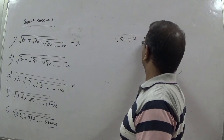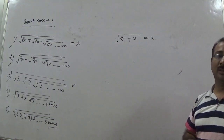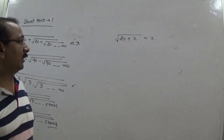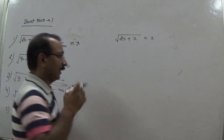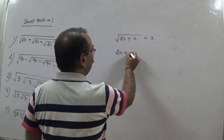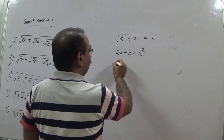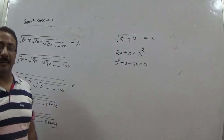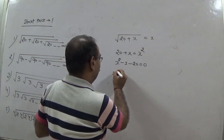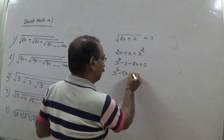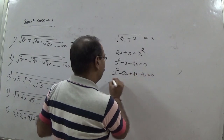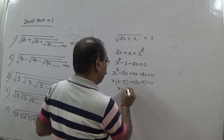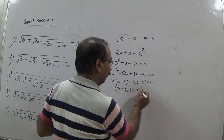So we write: root of (20 + x) = x. Squaring both sides gives: 20 + x = x². Rearranging: x² - x - 20 = 0. Factoring: (x - 5)(x + 4) = 0. So x = 5 or x = -4. Since we need a positive value, the answer is 5.